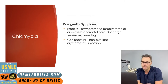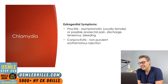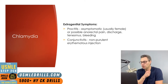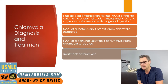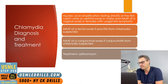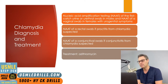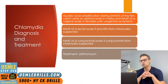Extragenital symptoms of chlamydia can occur in either sex and include proctitis and/or conjunctivitis. In females, proctitis may be asymptomatic, but otherwise patients will present with anorectal pain, discharge, tenesmus, and/or bleeding, while conjunctivitis presents as non-purulent erythematous injection of the eyes. Chlamydia can be diagnosed with nucleic acid amplification testing of the first-catch urine, urethral swabs in males, or NAAT of a vaginal swab in females with urogenital symptoms. If proctitis is suspected, a rectal swab is sent for NAAT; if conjunctivitis is suspected, a conjunctival swab is also sent for NAAT.